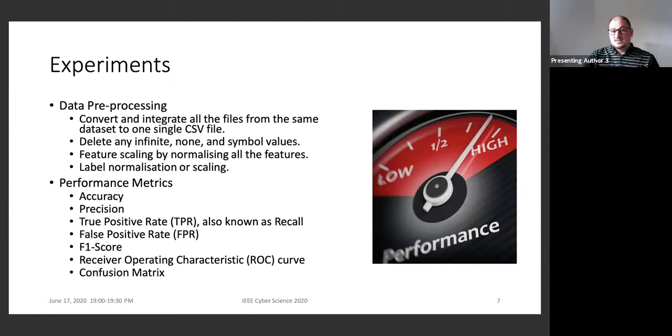As discussed earlier in the methodology slide, the three selected data sets have different properties, such as attack label names, features, collection duration, and scenario. We have gone through these four steps to clean the data. First step we have done is to convert and integrate all files from the same dataset into one single CSV file. Then, we delete any infinite, none, and symbol values from the CSV file. And feature scaling by normalizing all features. And then the final step depends on the label classification type that we use. Namely, binary classification uses label normalization, and for multi-classification, we use label scaling.